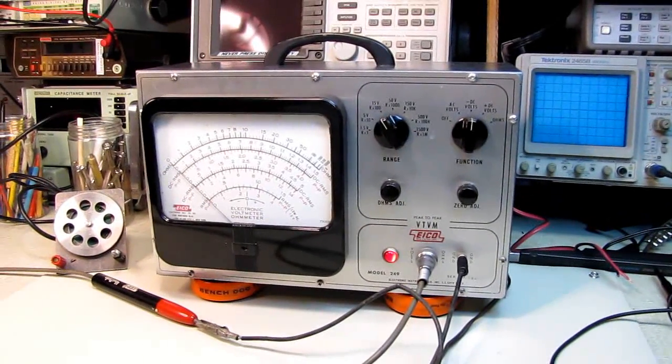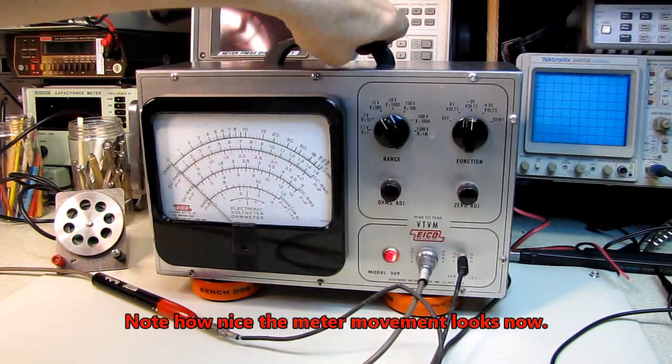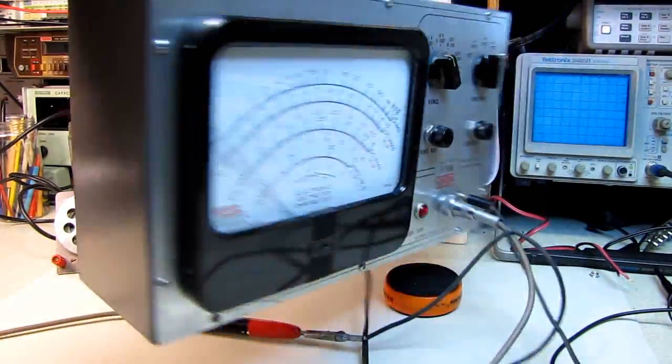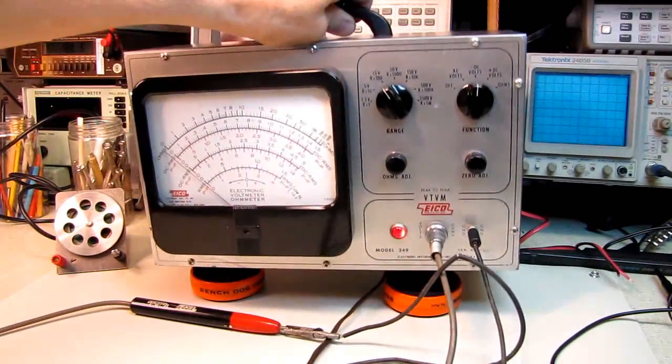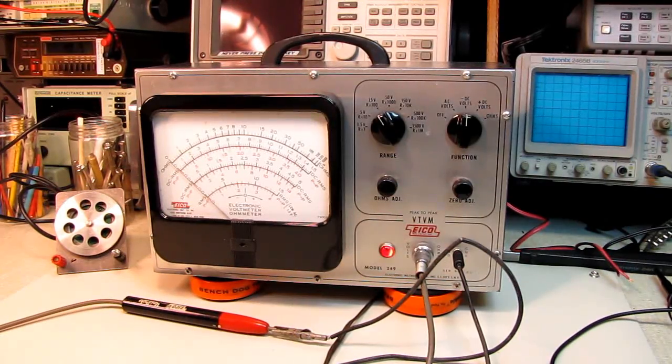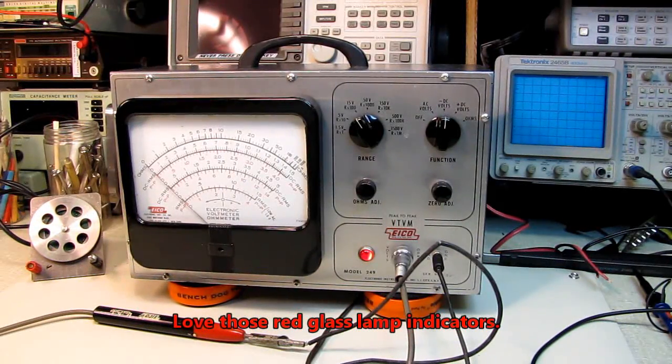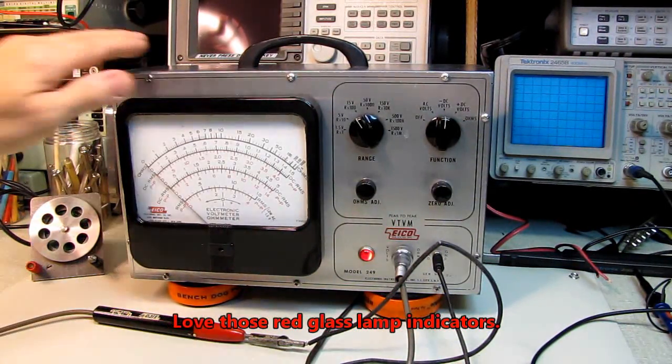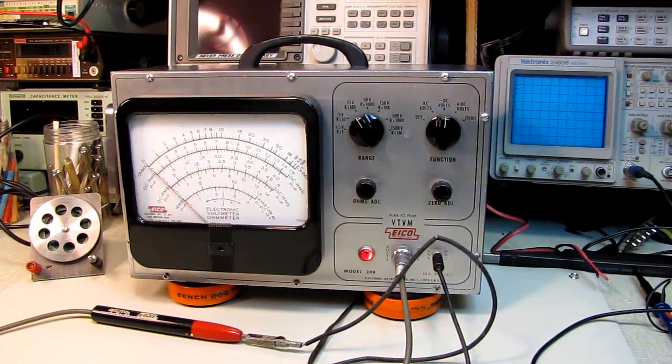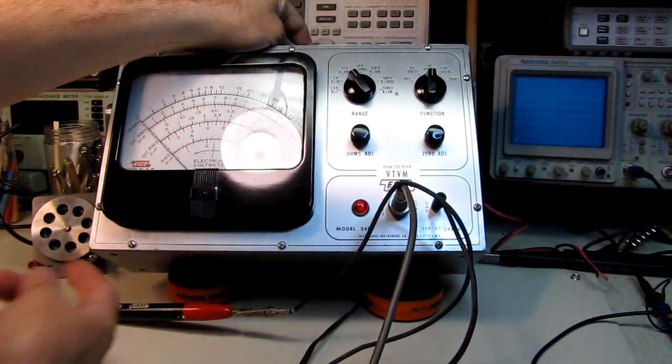And here we have our freshly restored ICO 249 VTVM. Not a museum restoration to be sure, but certainly worthy of sitting on the bench. We wouldn't want a museum restoration because this is going to be used and moved around, handled. We just want it presentable. I am still waiting on the proper feet to come in. We still need to restore the ground cable. I have to order some more meter lead. I'm out of black meter lead.